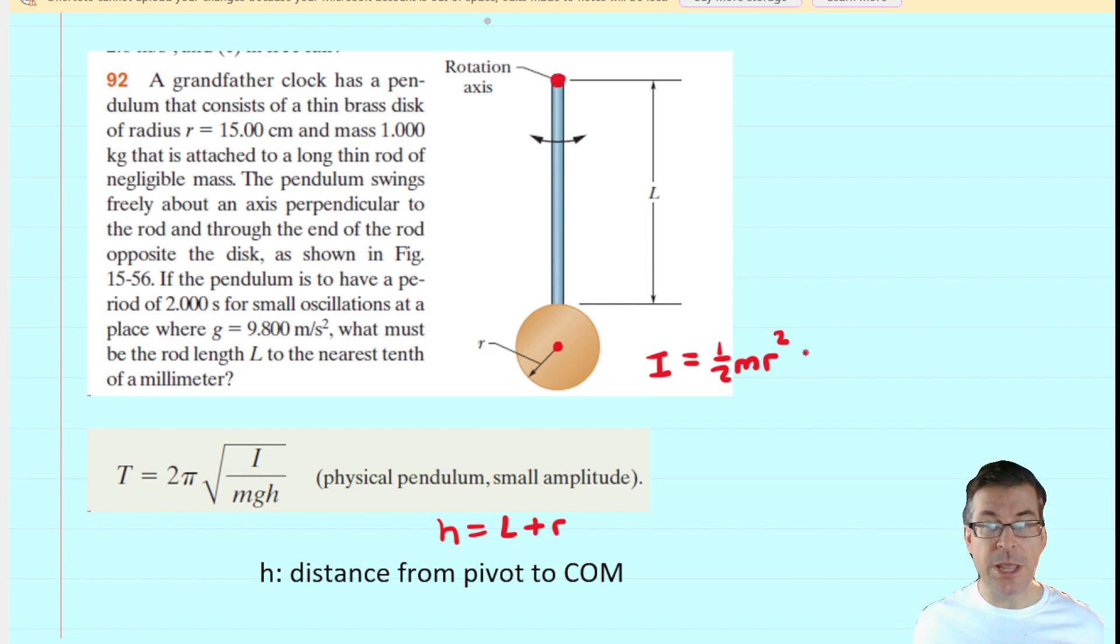So according to the parallel axis theorem, we would actually have to add an extra term onto our moment of inertia, and that extra term is going to equal the mass multiplied by h squared. Now once again, h is l plus r, so we can actually back up, and for h we can fill in that term l plus r, like so.